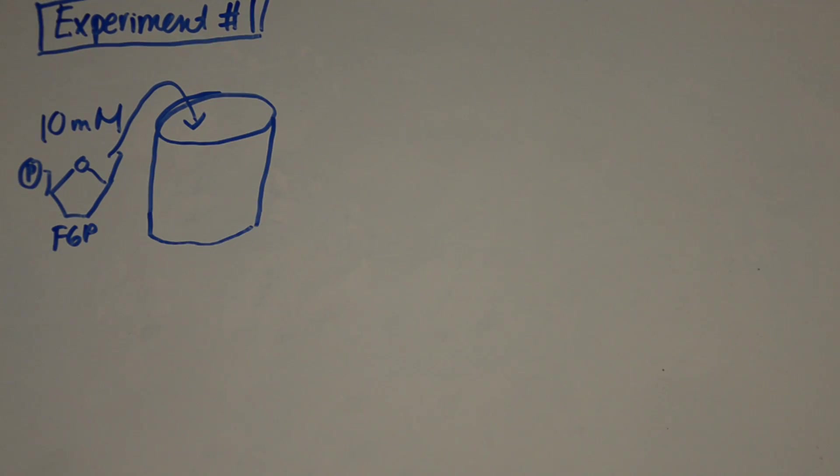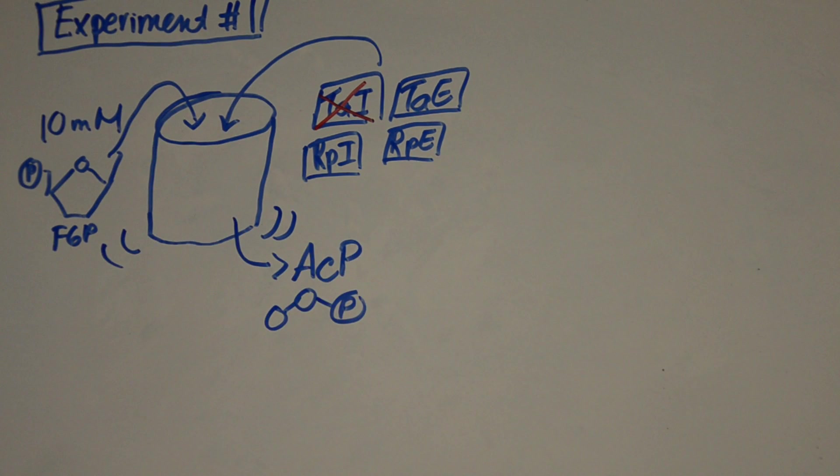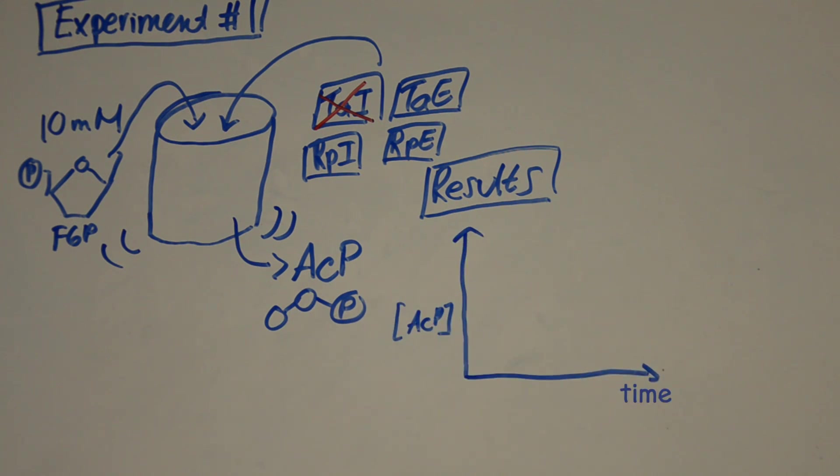So first, they put in all their relevant enzymes, except for one, and measured the concentration of these ACP molecules. The enzyme missing is called TAL, which is essential for the carbon rearrangement step of E4P to F6P. Without it, the pathway doesn't sustain itself. They found much higher levels of ACP when TAL is added, as opposed to when they are not. This in vitro experiment confirms that the enzymes produce ACP and that carbon rearrangement is needed to sustain the cycle.